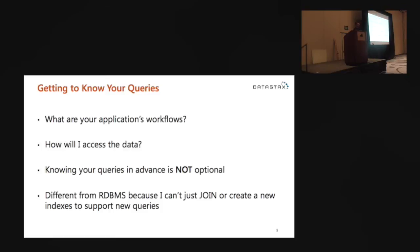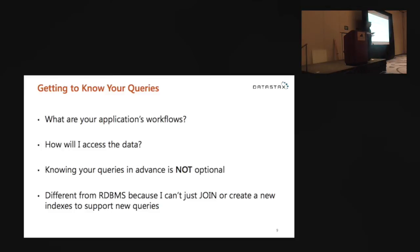As you start thinking about workflows — how are people going to use the site or app — you'll figure out how you're going to access the data. Queries, which is really our ultimate goal with Cassandra data modeling, will fall out of these workflows. Knowing your queries upfront is not optional with Cassandra, because we don't have the flexibility at query time that we get in the relational database — things like joins, sub-selects, and aggregations. We don't have those tools in Cassandra.